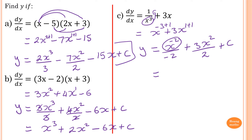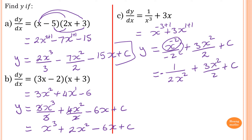Simplify this — because the question is given in positive indices, so we move this down. So that becomes 1 over negative — I put in the middle — so which is 2x to the power of 2, plus 3x squared over 2, plus a constant. Please pause the video and try this one yourself.